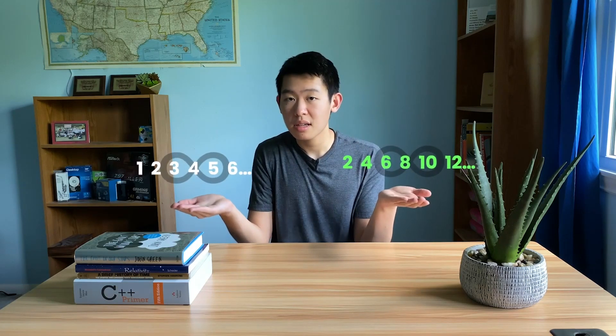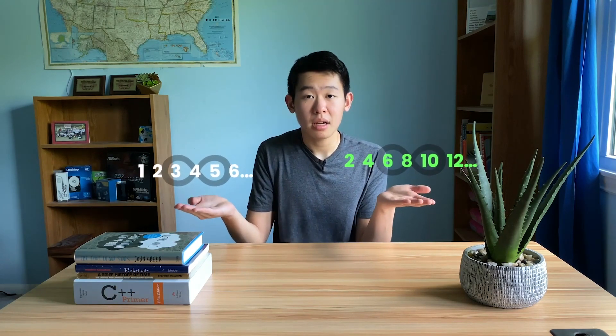What makes one set of things larger than another? Usually we can count, but what about something infinite? We can't exactly count to infinity, so what makes one infinity larger than another?